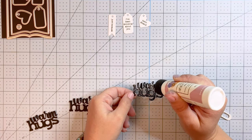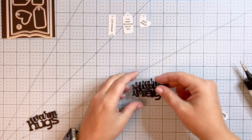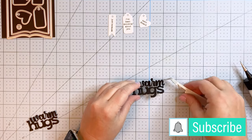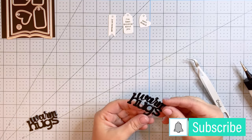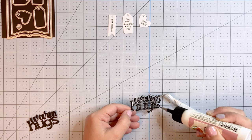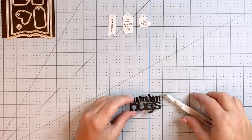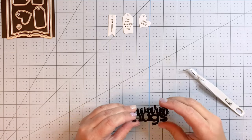Next, I am using the autumn word trio dies. These are gorgeous. I'm using the one that says warm hugs, and you can see I've cut out three layers. I'm going to layer these up with some liquid adhesive, just taking my time to pinch the edges so I can make sure I get a nice clean layering of those sentiments there.